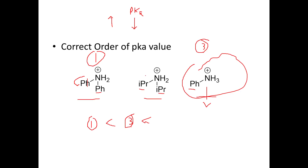Compound two will have the highest pKa because the isopropyl groups present are electron-donating groups — they have a +I effect. Because of this +I effect, they stabilize the nitrogen. Since this nitrogen is getting stabilized, it is less likely to lose the proton compared to compounds one and three. So compound two has the highest pKa because it is stabilized and less likely to donate the proton.